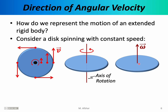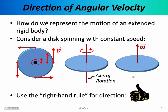You might wonder why the angular velocity vector points up rather than down — this is a matter of convention. We've adopted the right hand rule: take your right hand, place your wrist at the center of rotation on the axis, curl your fingers around the disk in the same direction as its rotation, and stick out your thumb. The direction of the thumb indicates the direction of the angular velocity vector. Make sure you're using your right hand, and remember your thumb indicates the direction of omega.